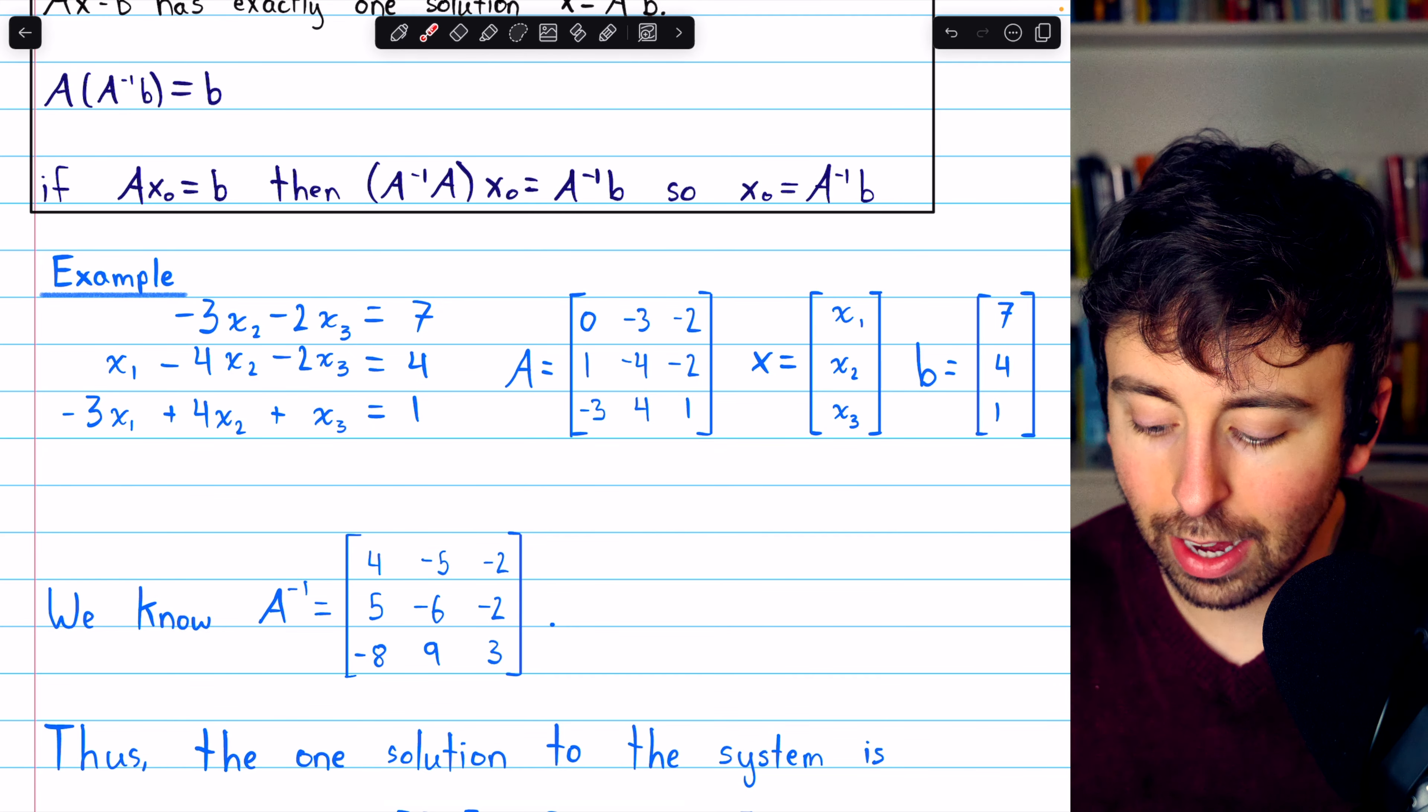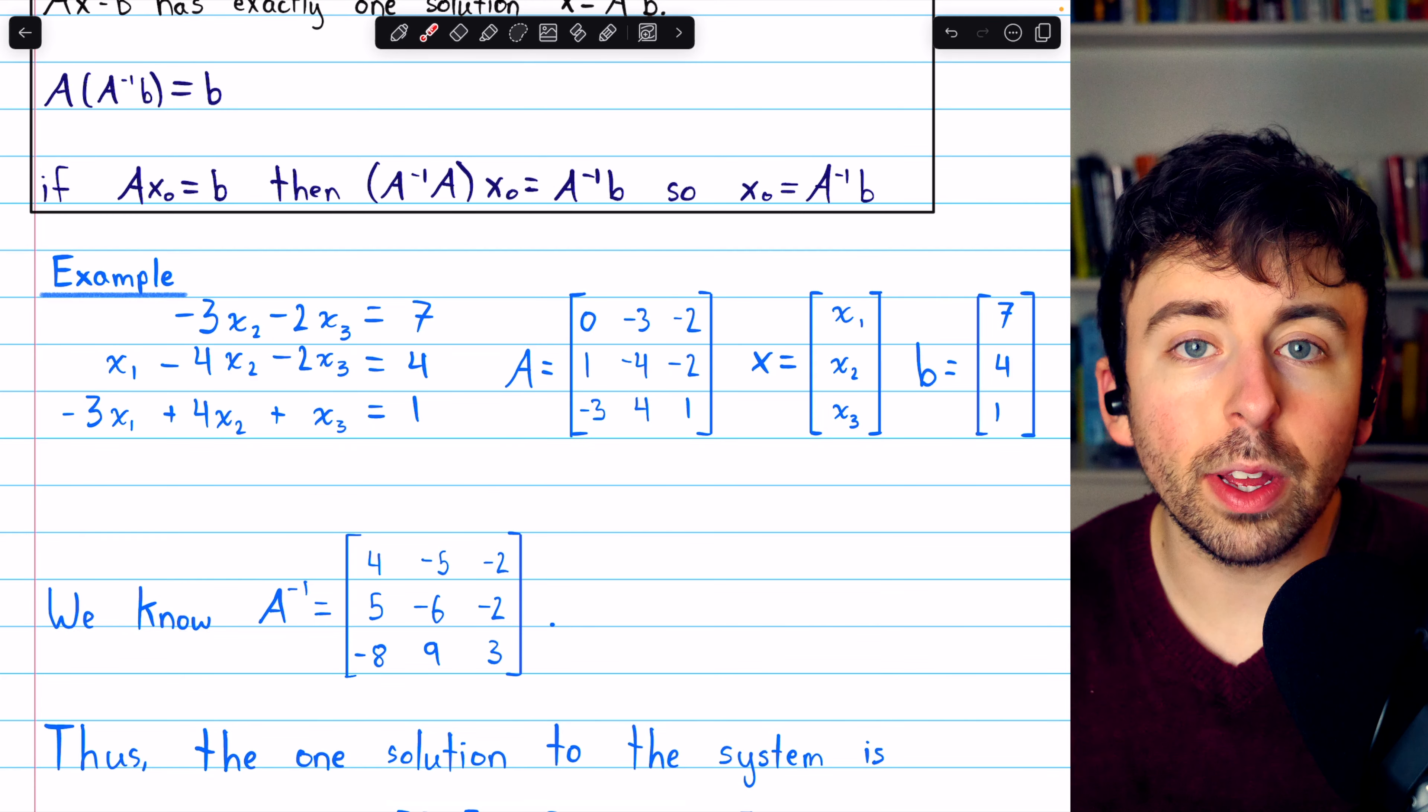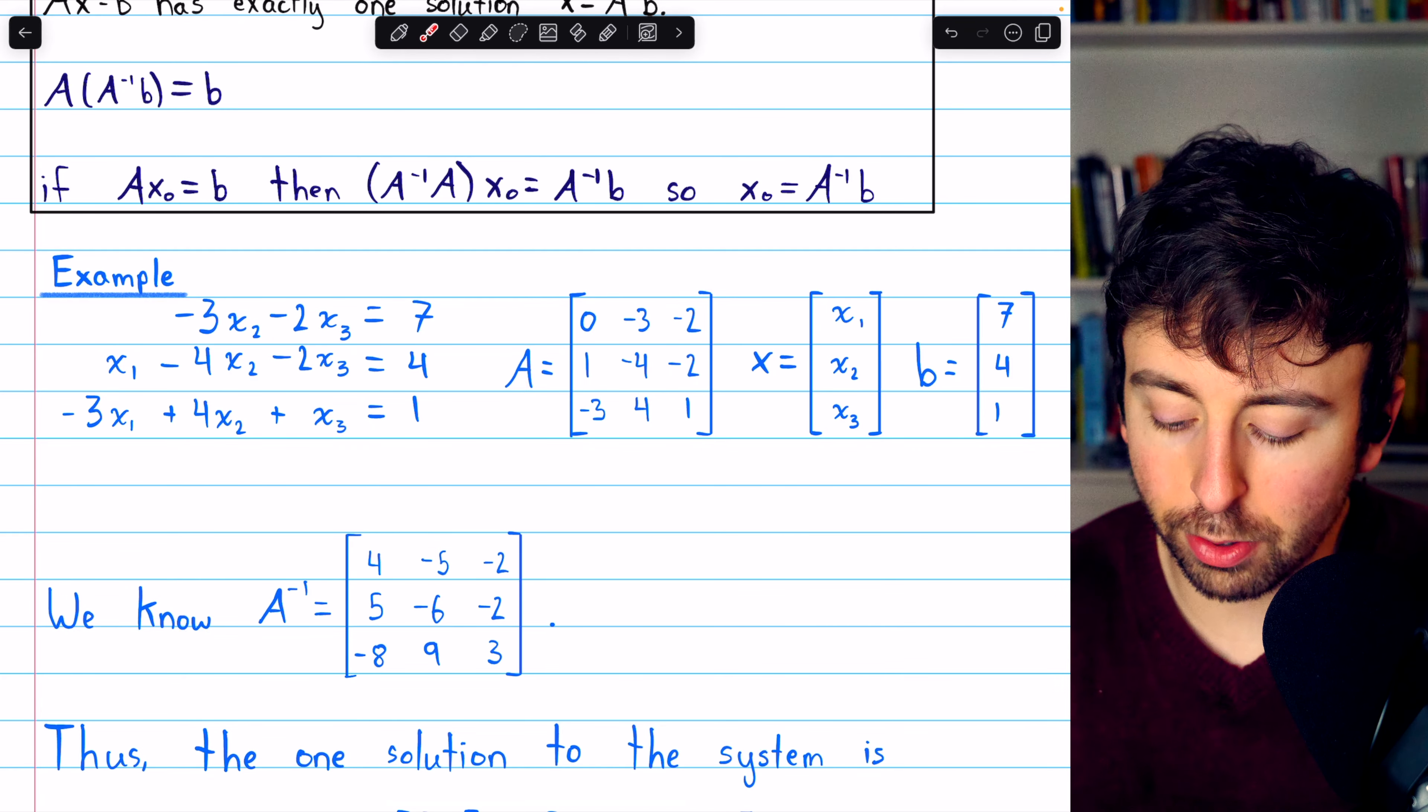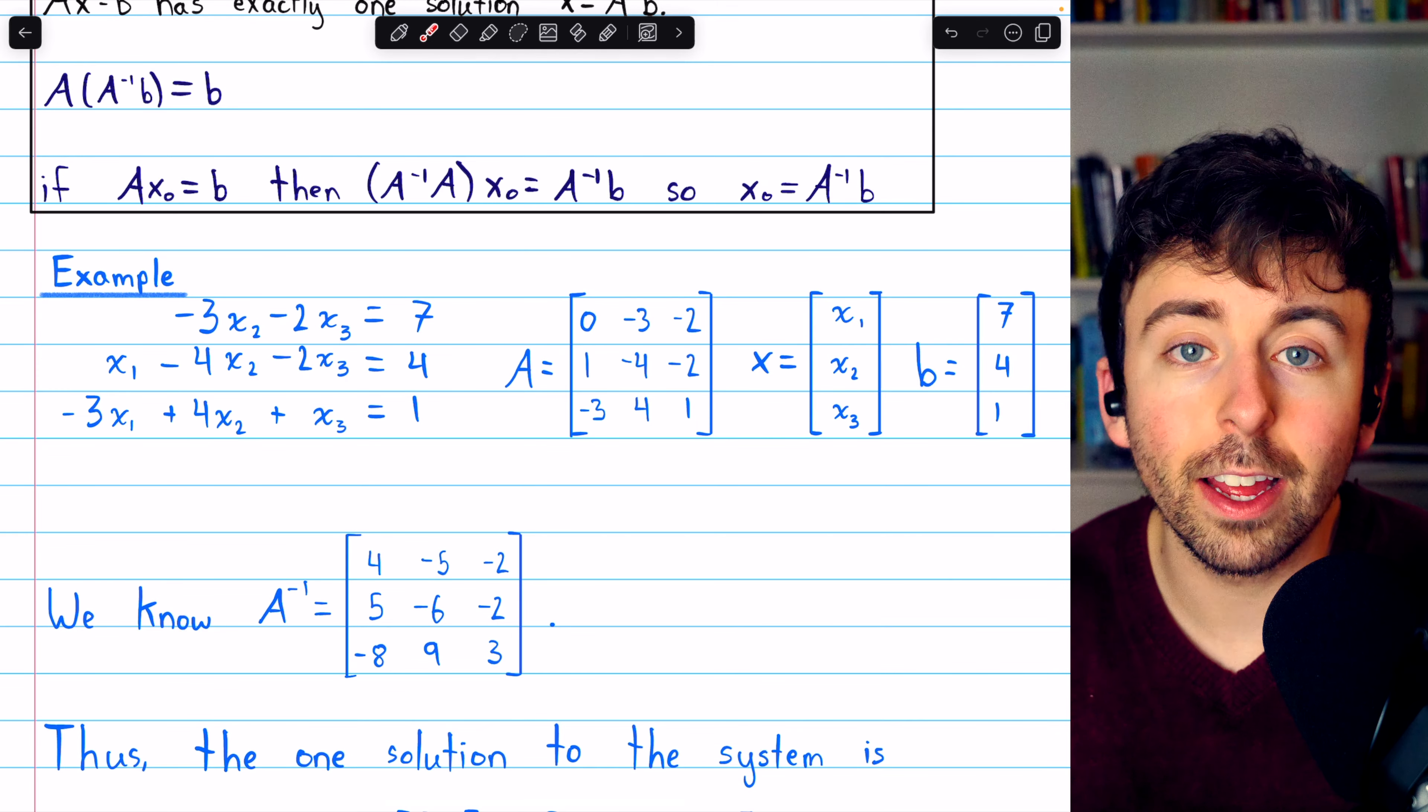And this is the column vector B with the constants from the right side, seven, four, and one. Now, we know if A is invertible, this is very easy to solve. We just multiply A inverse by B.